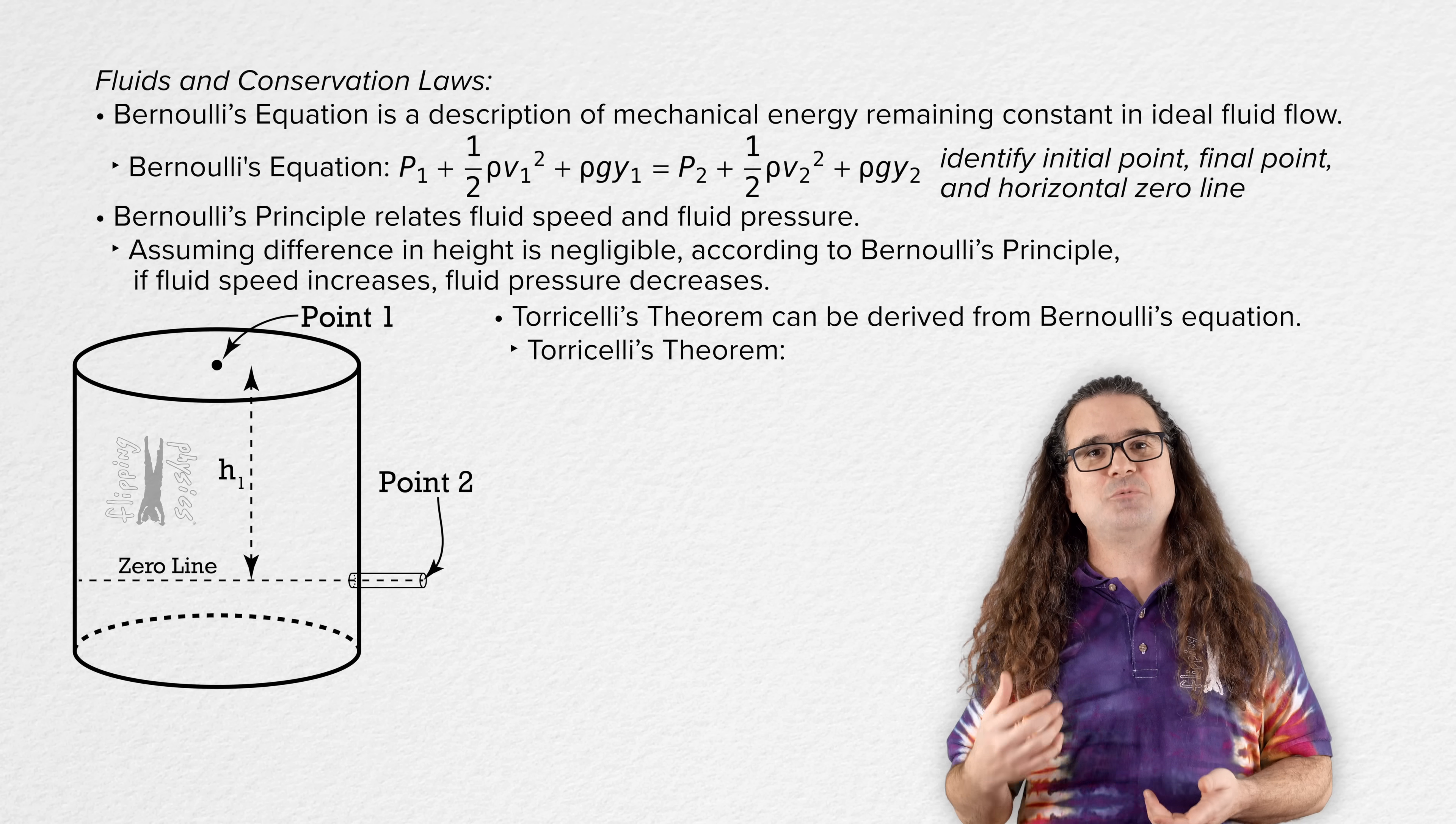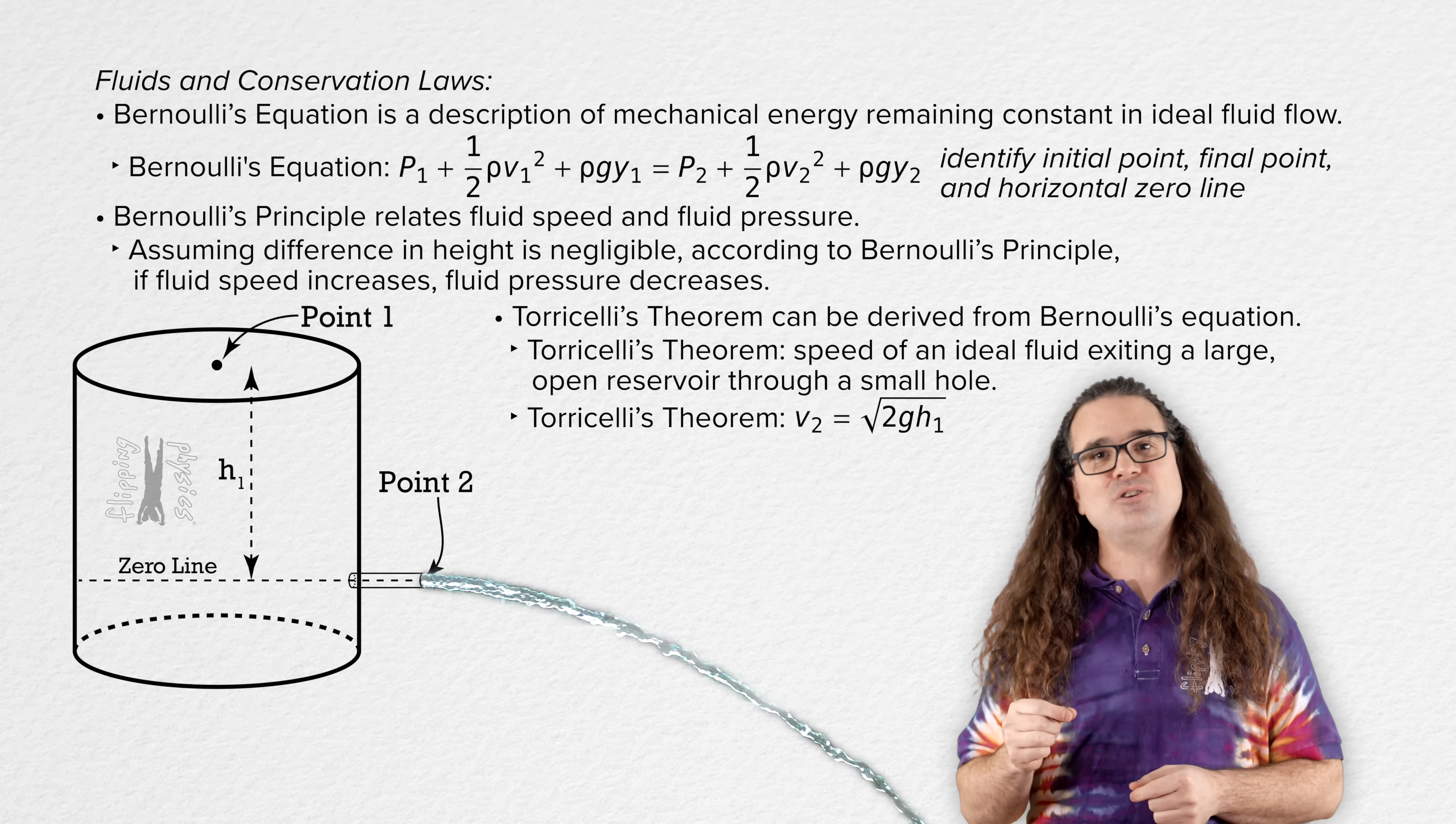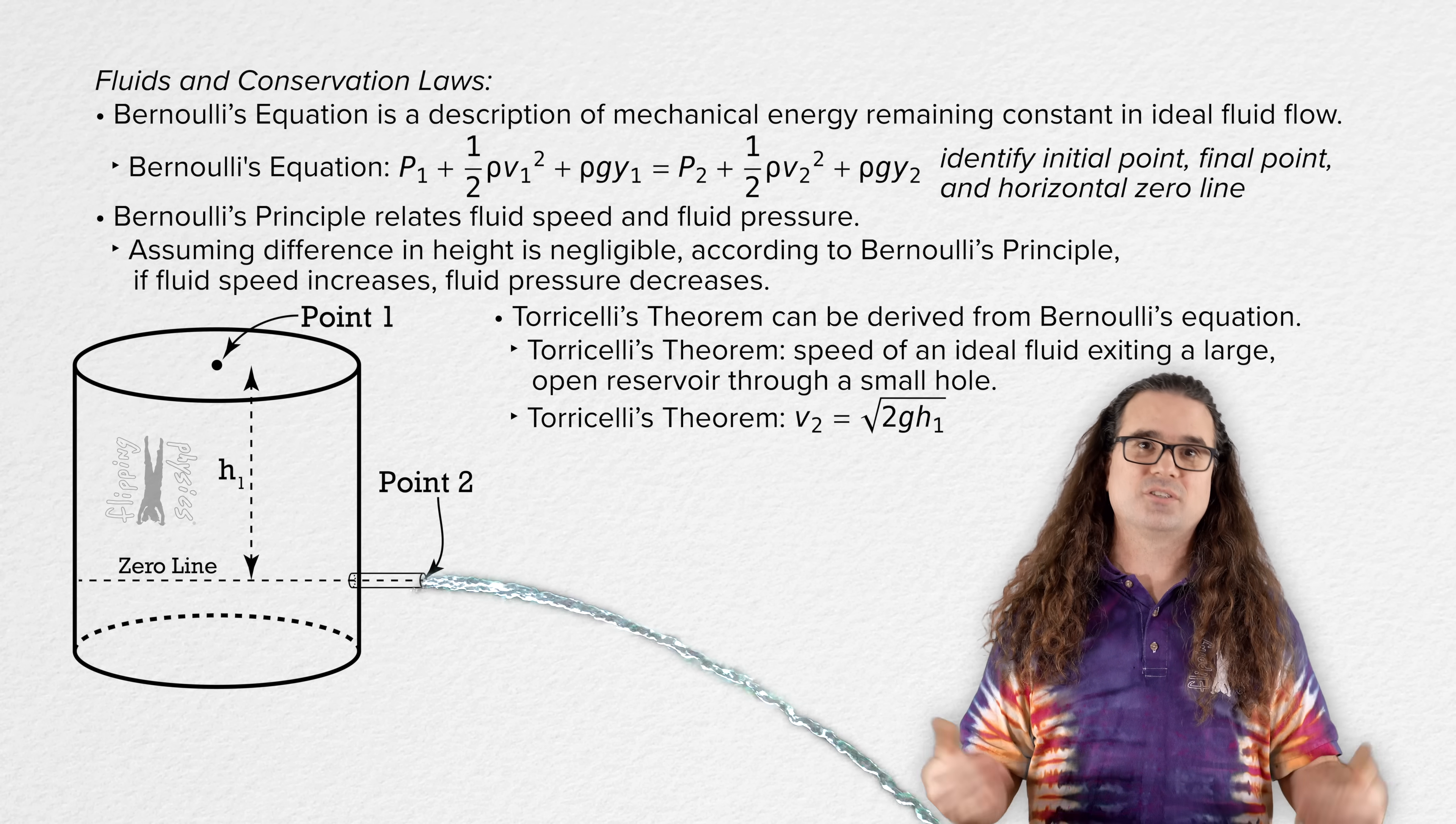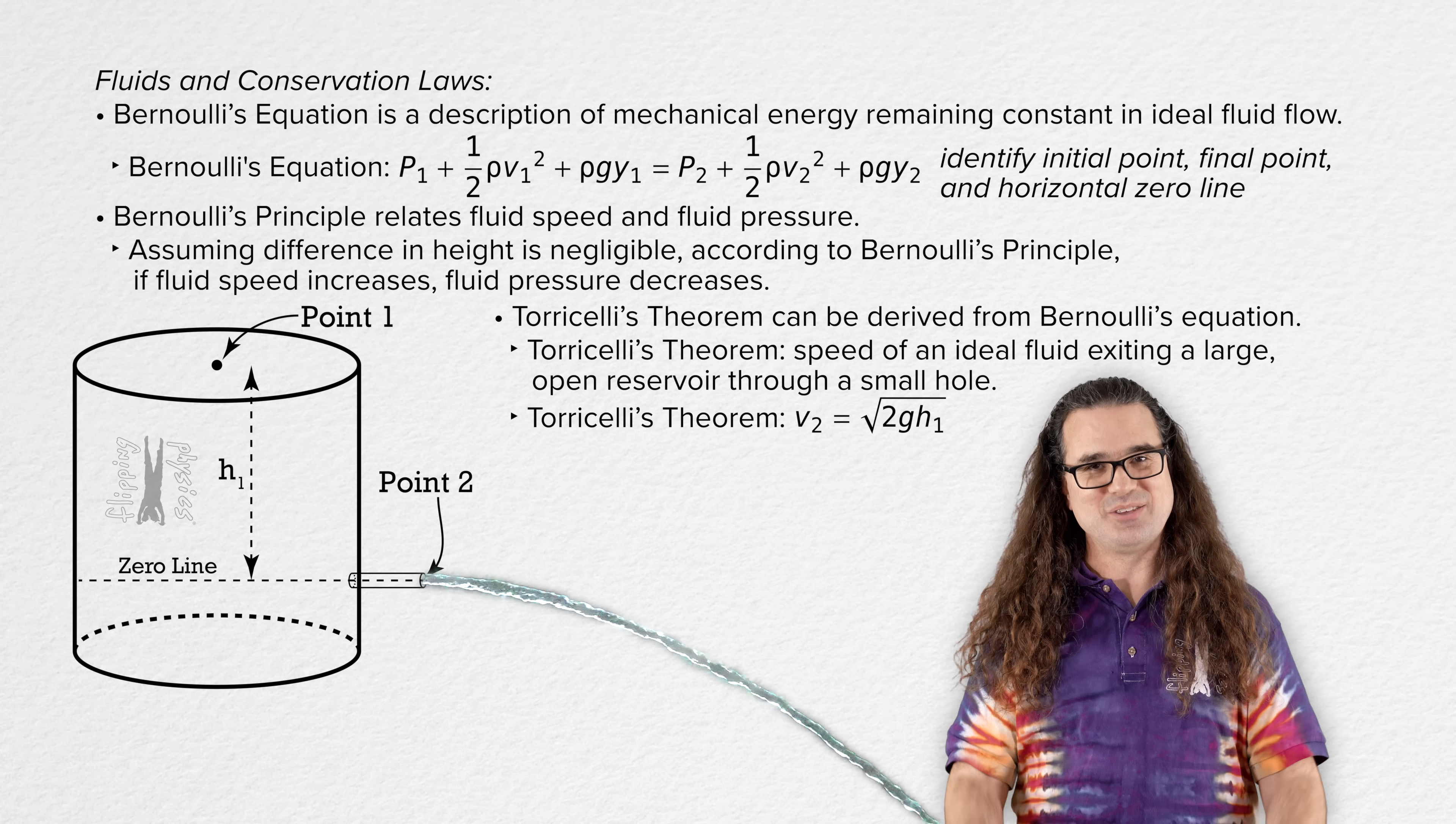And lastly, we have Torricelli's theorem, which can be derived from Bernoulli's equation. Torricelli's theorem gives us the speed of an ideal fluid exiting a large open reservoir through a small hole. Torricelli's theorem says that speed equals the square root of 2gh. We, of course, demonstrated this and derived this. And yes, you definitely need to know how to derive Torricelli's theorem. Thank you very much for learning with me today. I enjoy learning with you.